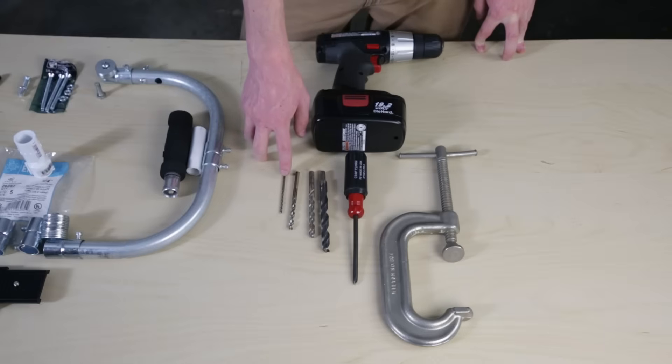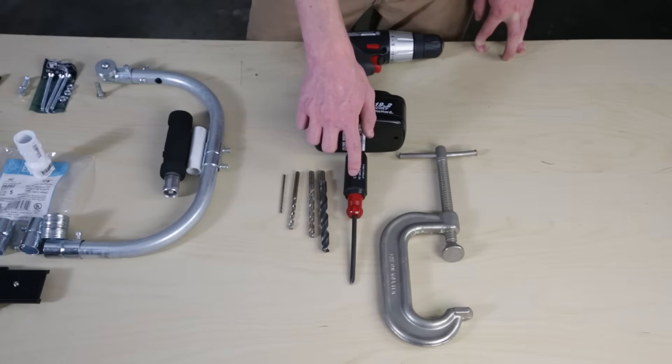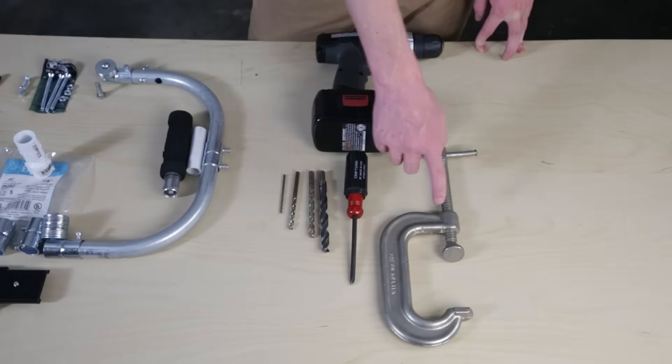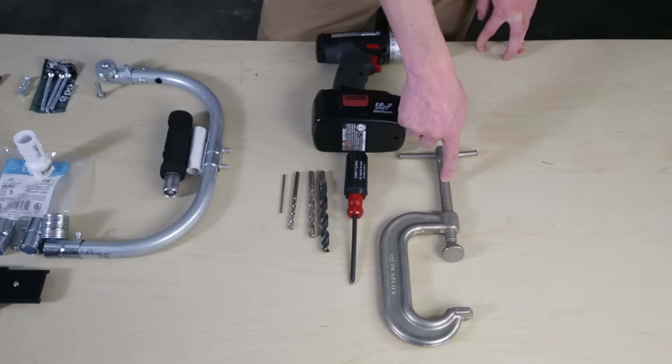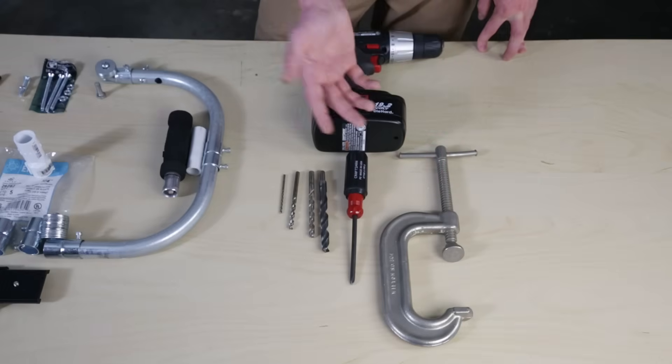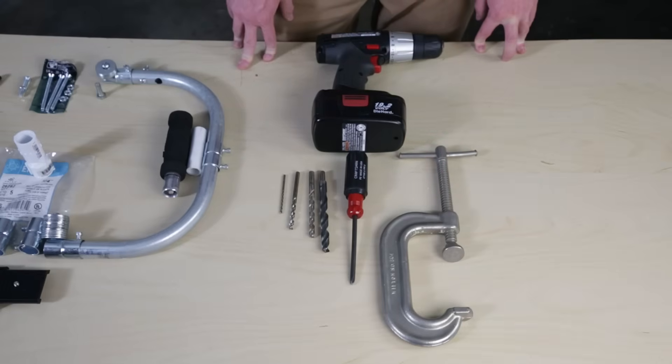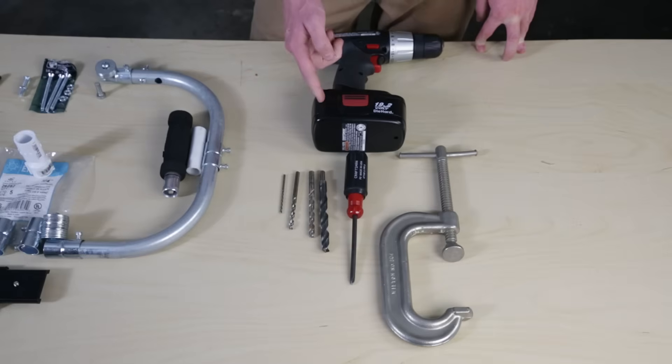First you need a pre-drilling bit for your initial hole, a one-fourth inch bit, a three-eighths inch bit, and a half inch bit. Then you'll need a Phillips head screwdriver and a clamp for clamping down your PVC pipe. You can always get a vise or anything that you can to hold it down, and a handheld drill.